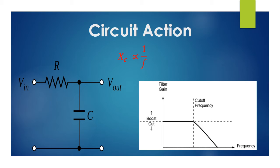As the frequency gradually increases, the capacitive reactance decreases. When we design a filter circuit, we define a frequency limit — signals at and below this limit are the required frequencies, and signals above it are attenuated. This limiting frequency is called the cut-off frequency. After the cut-off frequency, as frequency increases, the capacitive reactance decreases and the output decreases, as shown in the graph for a low-pass filter.